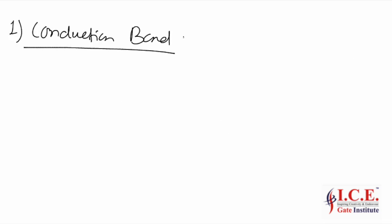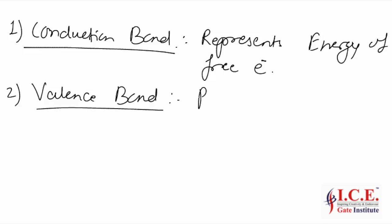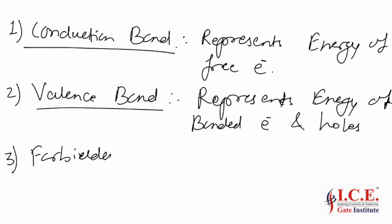So there are three energy bands. First, the conduction band, which represents the energy of free electrons — the type of electrons which can move when supply is given. Second, the valence band, which represents the energy of bonded electrons and holes in the material. Third, the forbidden band, which is the separation between the conduction band and the valence band.